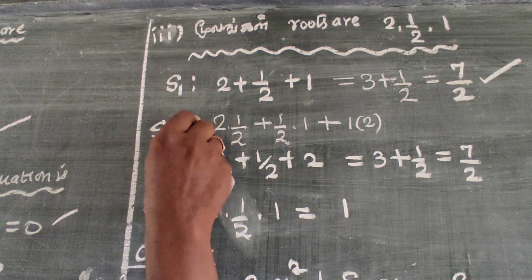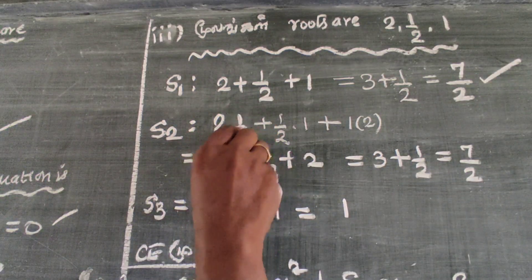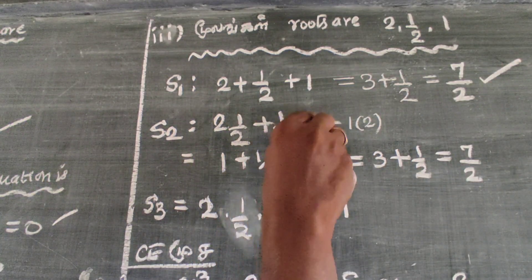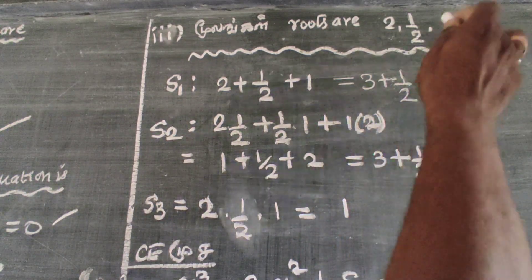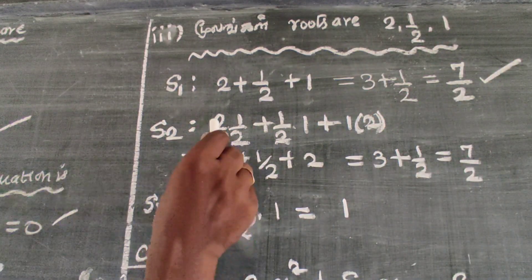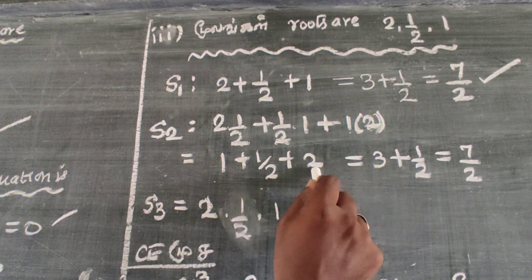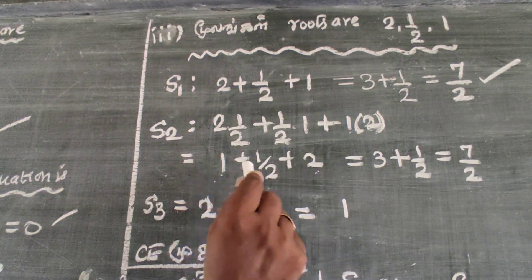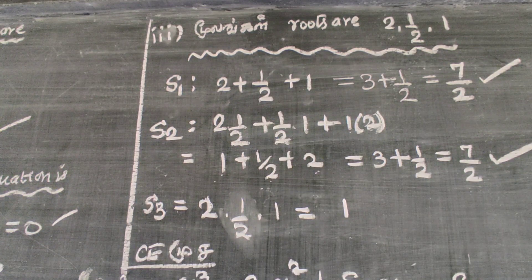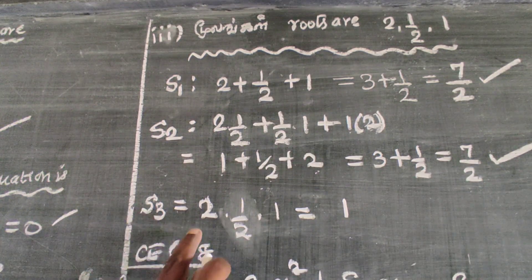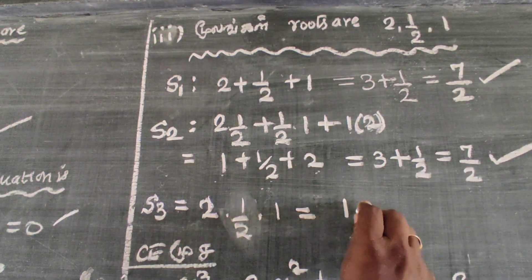S2 is the sum of products of pairs: 2 into 1 by 2, plus 1 by 2 into 1, plus 1 into 2. That gives 1 plus 1 by 2 plus 2, which equals 3 and half, equal to 7 by 2. S3 is the product of 3 roots: 2 into 1 by 2 into 1. The 2 cancels, so 1 into 1 equals 1. S3 is equal to 1.